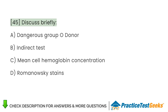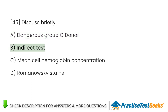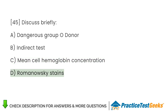Discuss briefly: A. Dangerous group O donor. B. Indirect Coombs test. C. Mean cell hemoglobin concentration. D. Romanowski stains.